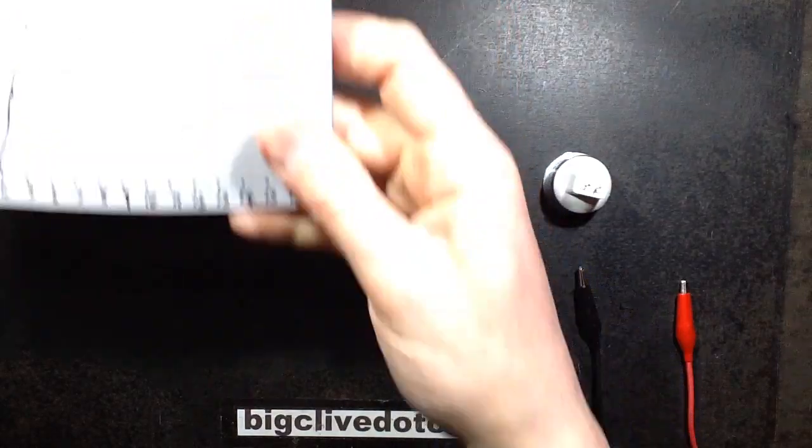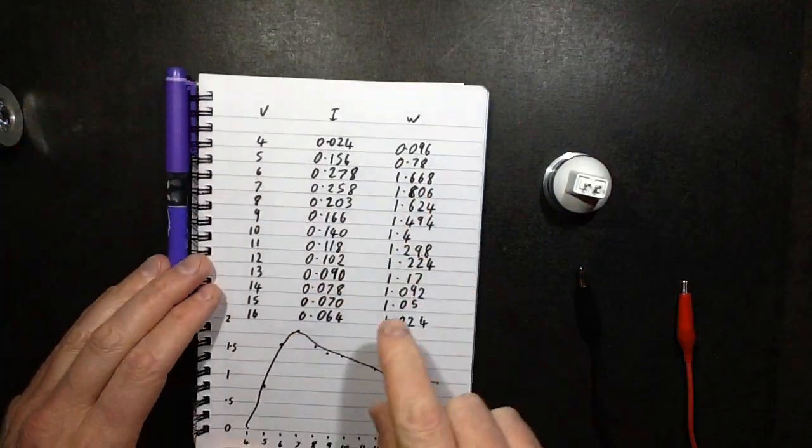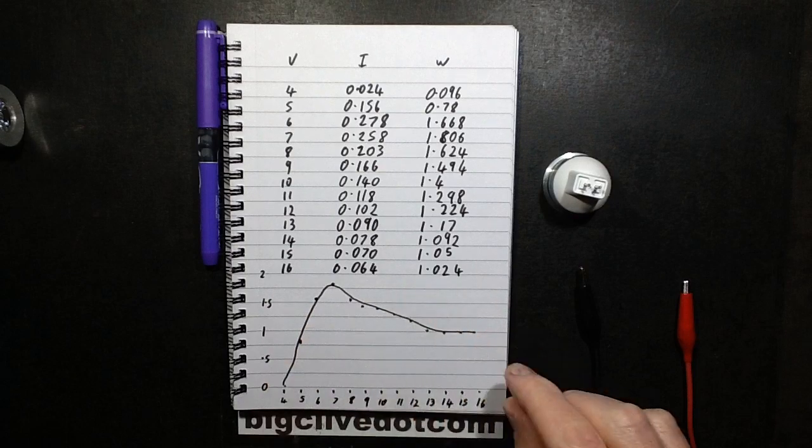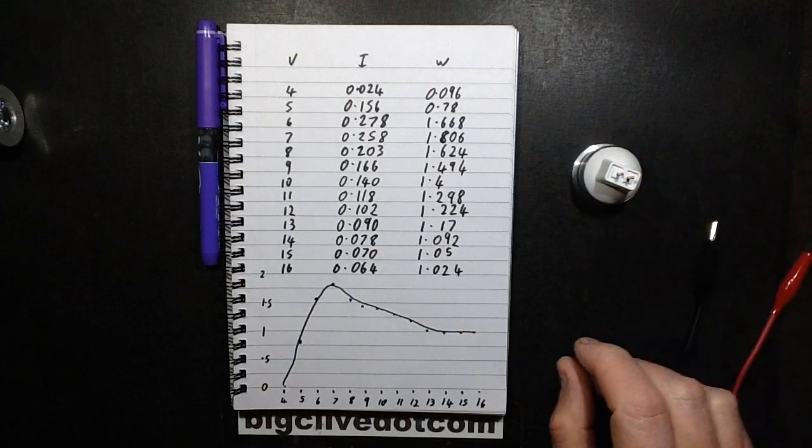I took it from 4 volts when it starts lighting fairly brightly up to 16 volts, which is the limit of that range in the power supply. I didn't really want to go much higher anyway because it is a 12 volt lamp theoretically.